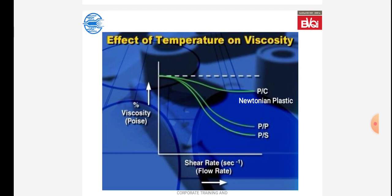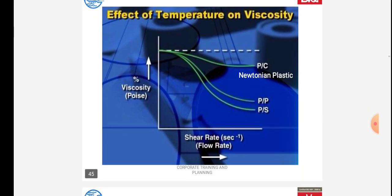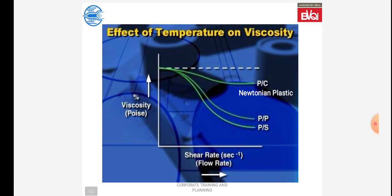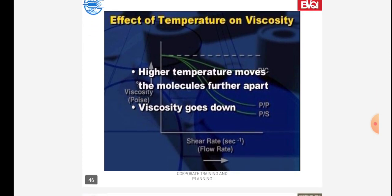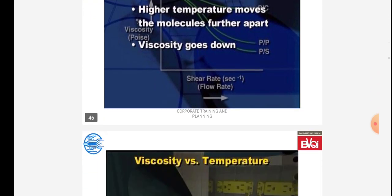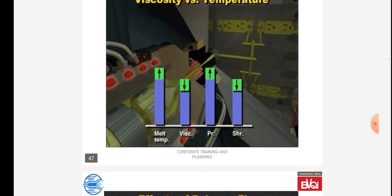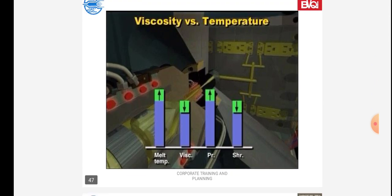Effect of temperature on viscosity for non-Newtonian plastics: higher temperature moves the molecules further apart, so viscosity goes down when temperature increases. A viscosity versus temperature chart is given in the diagram showing melt temperature versus viscosity.